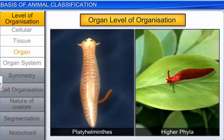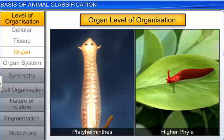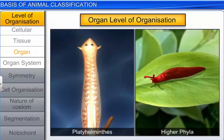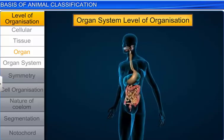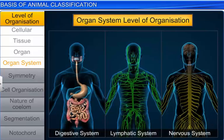Organ level of organization is exhibited in members of platyhelminthes and other higher phyla, where tissues are grouped to form organs, and each organ performs a particular function. The last cell pattern is the organ system level of organization, where organs are associated with one another to form a functional system, and each system performs a specific physiological function.